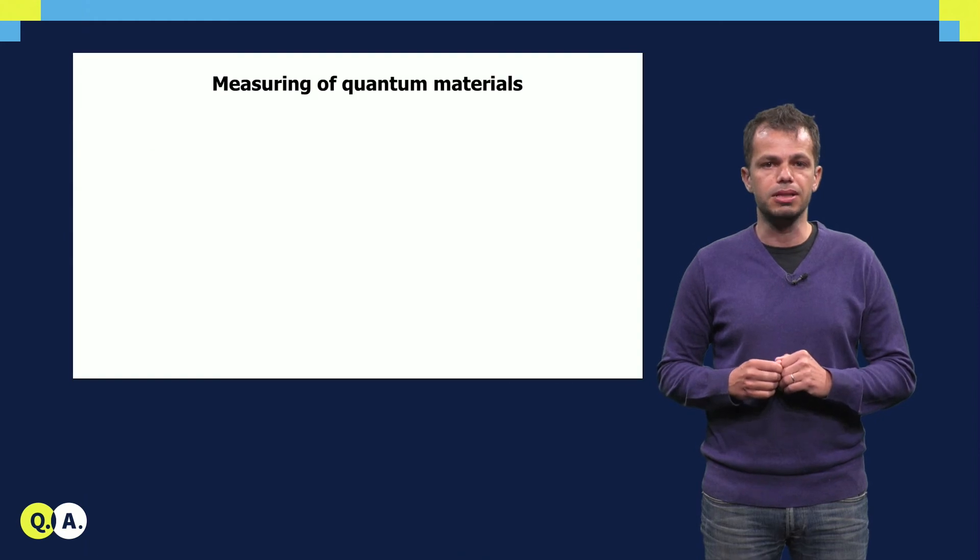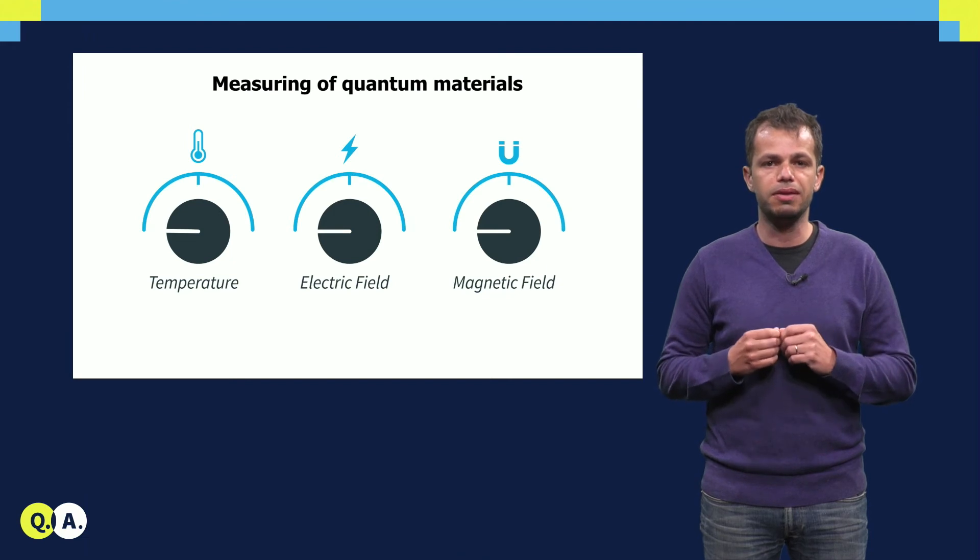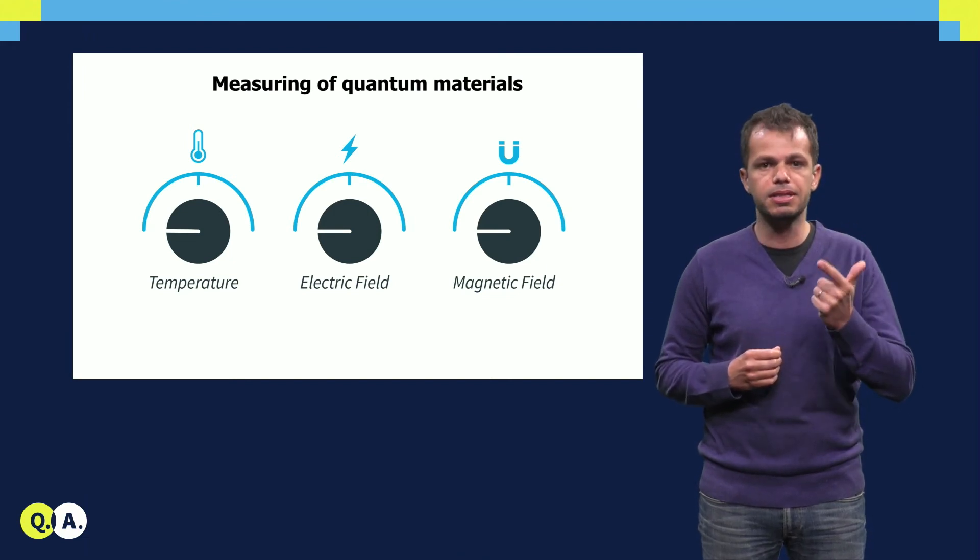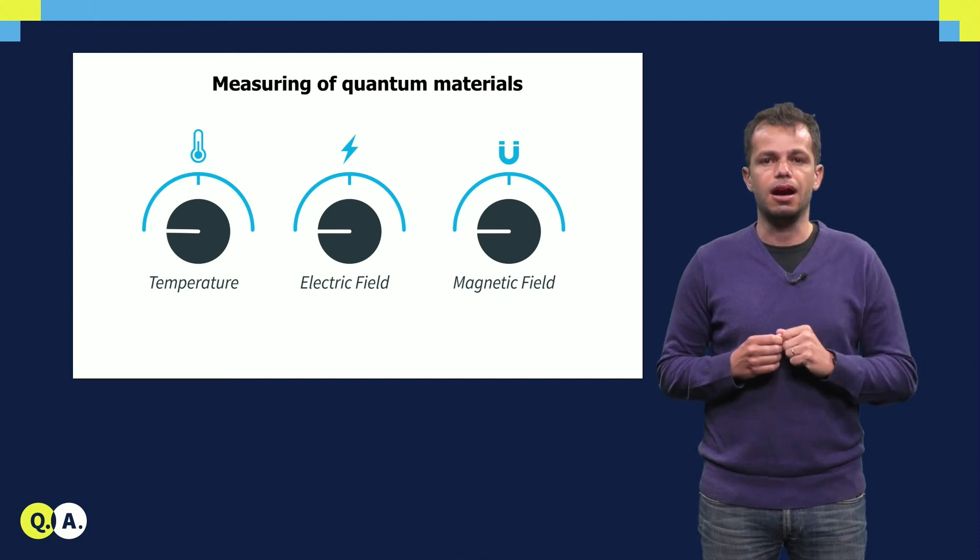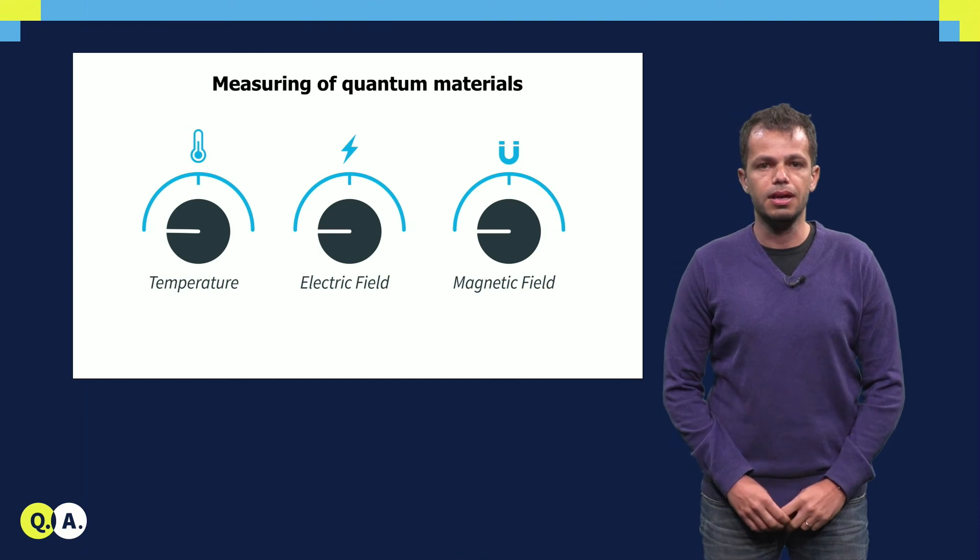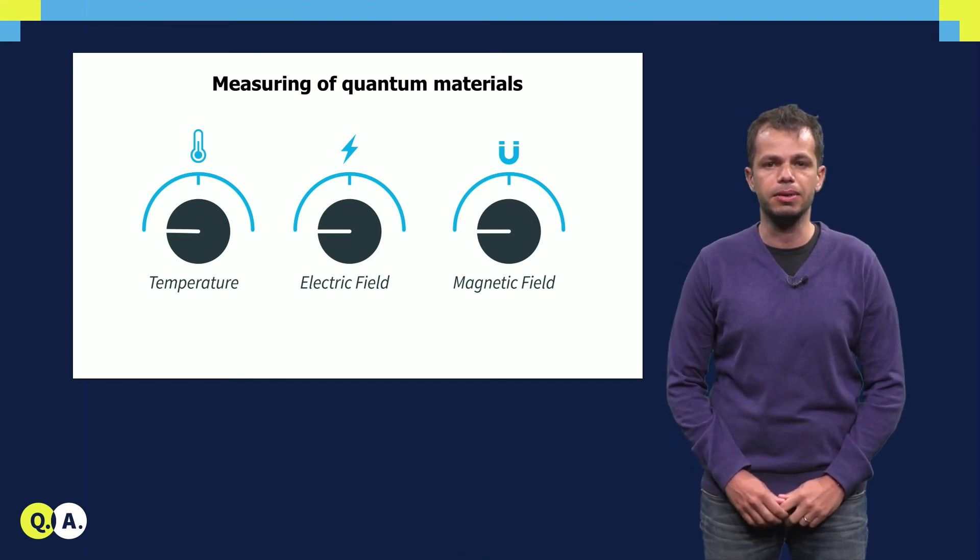Once we know how the material we made looks like, we usually study its electronic properties by modifying them with external parameters. Temperature, electric fields, magnetic fields are the few knobs that we turn in our labs to probe quantum materials. These studies provide useful feedback to make the material a better environment for the qubits.